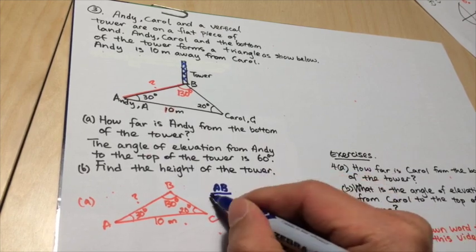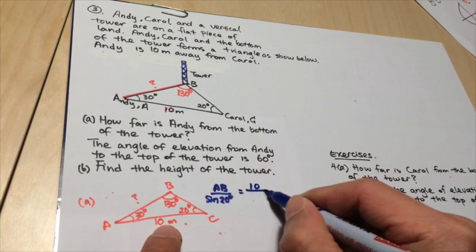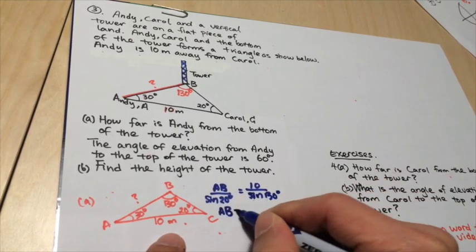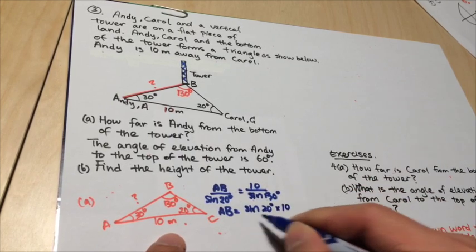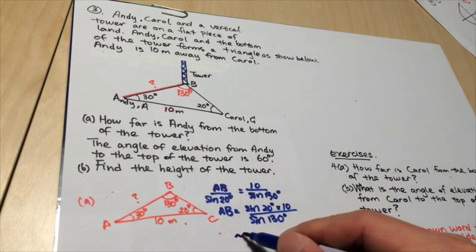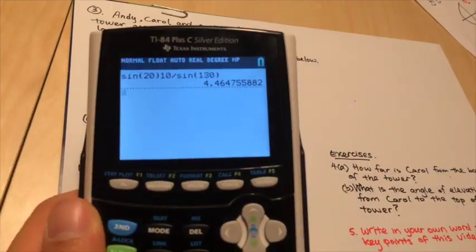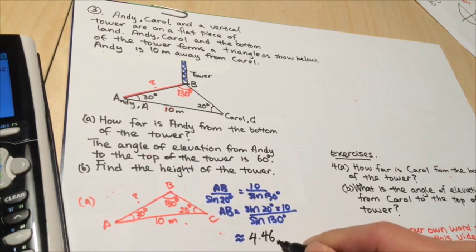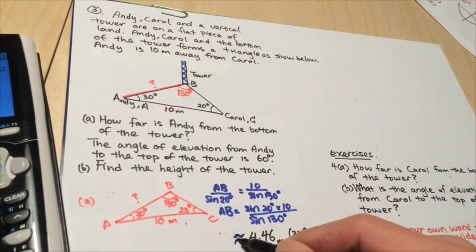AB over sine 20 degrees is equal to 10 over sine 130 degrees. So AB itself is equal to sine 20 degrees times 10 over sine 130 degrees. So this is the working that you need to produce, right, as I've written here. And the next step is to use the calculator, 4.46. So that is 4.46 meters 3SF. And because this is an approximation, I'm using the approximation sign.